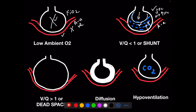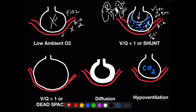A shunt occurs when V/Q is less than 1 — ventilation is less than circulation. This can also occur with pulmonary embolus: if there is a PE on one side, all blood flows to the other lung where V/Q is less than 1. In the affected lung, ventilation is present but there's no circulation — V/Q is greater than 1, creating dead space. Other types of shunts include capillary shunting in sepsis, liver disease, and cardiac shunts.